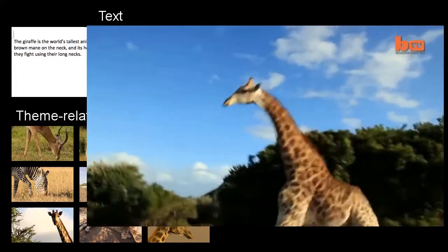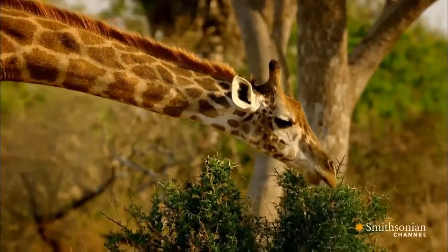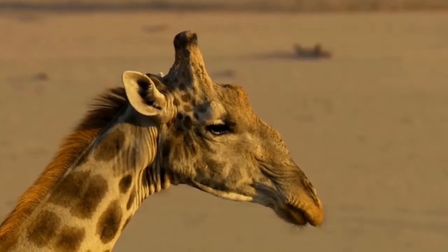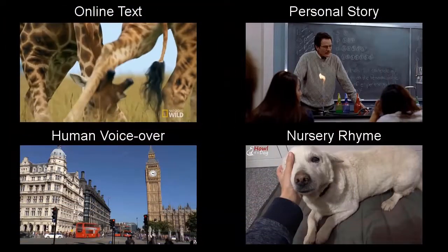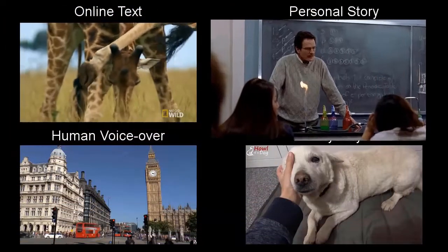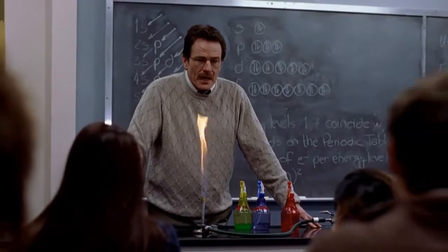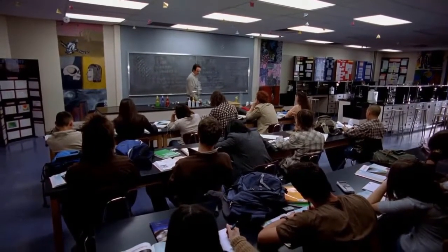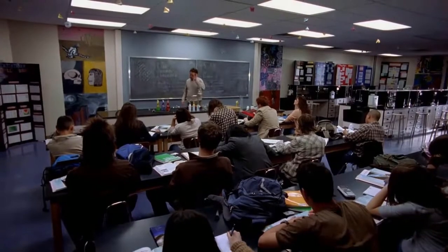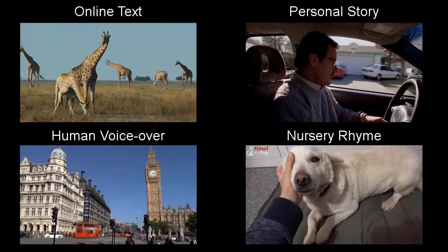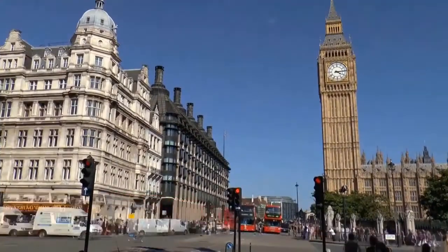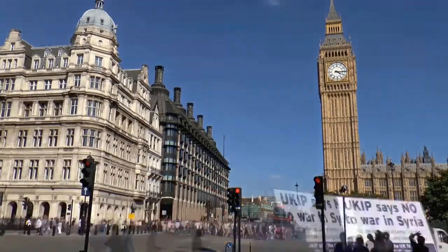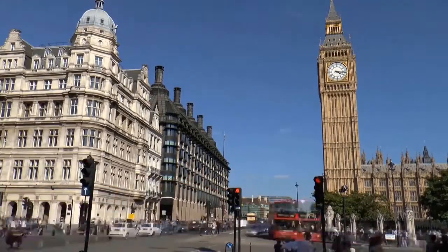For example, for online texts: 'It has a brown mane on the neck and its head has two hairy horns.' For personal stories: 'John is a chemistry teacher. Specifically, his job is to teach how to do chemical experiments in class.' For human voiceovers: 'And of course there's Big Ben, the famous clock tower completed in 1859.'